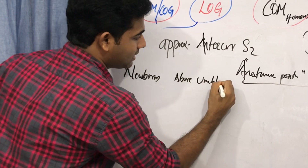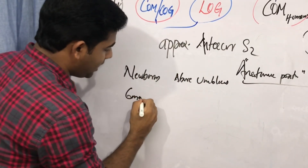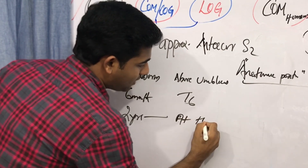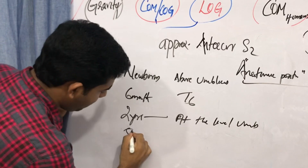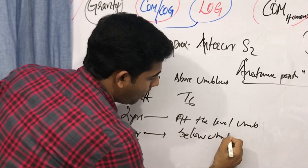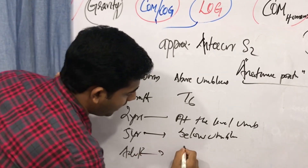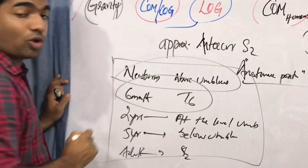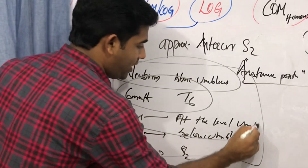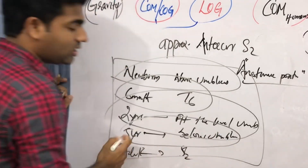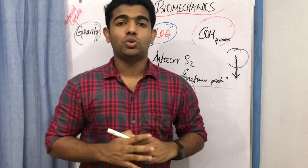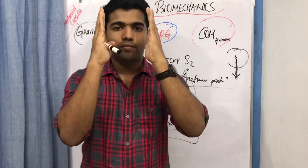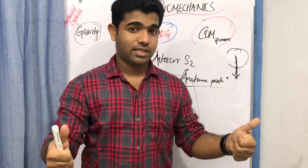Some developmental terms: in a newborn, the center of mass is located above the umbilicus. At six months it is at the level of thoracic vertebra 6. At two years it is at the level of the umbilicus. By five years it is below the umbilicus. And by adulthood it reaches anterior to S2 vertebra. With that we wind up the session. Next session covers base of support and its relation to stability. If you haven't subscribed, please subscribe and like the video.